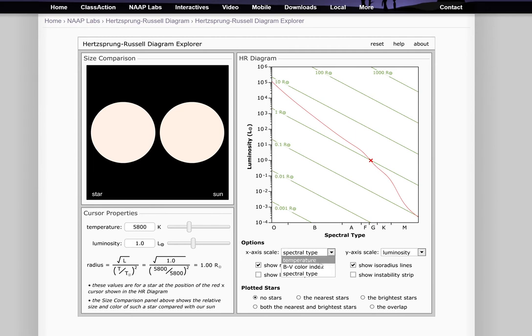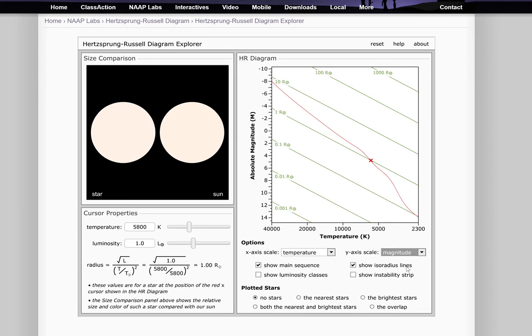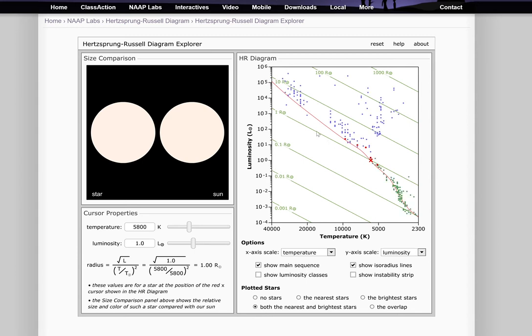Similarly, the y-axis scale—I can say absolute magnitude because that is connected to the luminosity, but I'm going to keep this as luminosity and temperature. I will show the nearest and the brightest stars, so stars that we know of that we can plot on this.